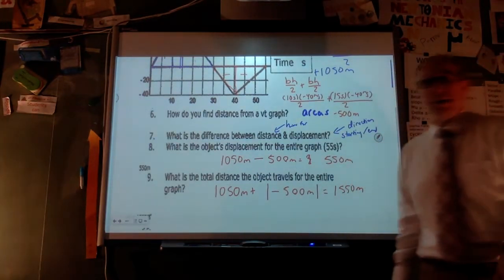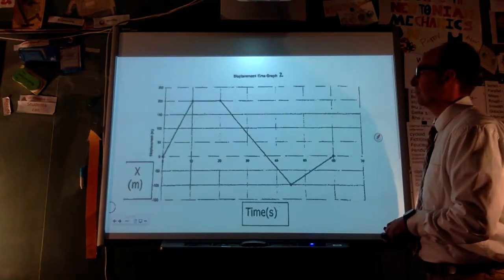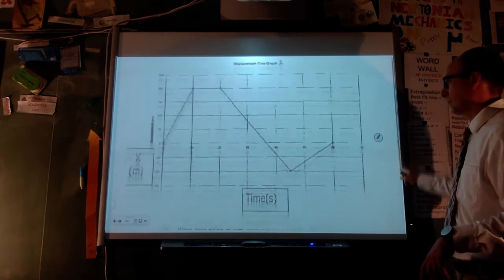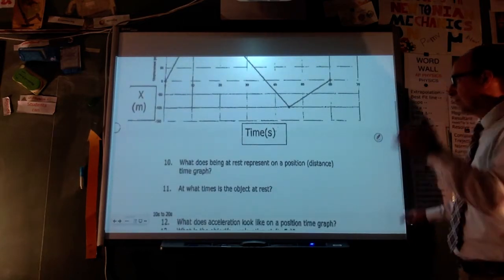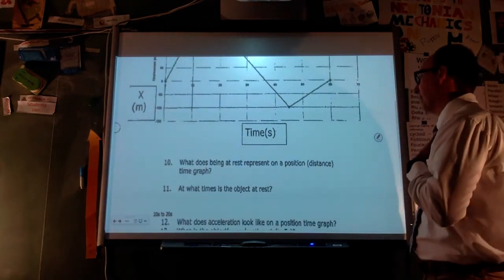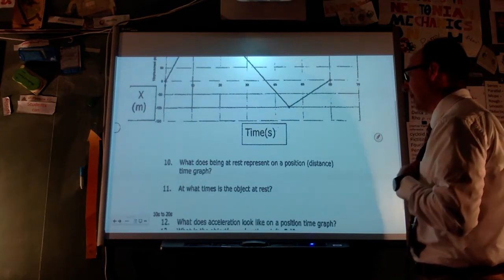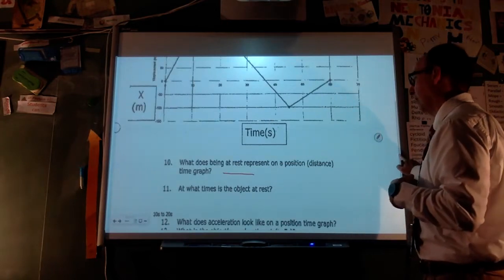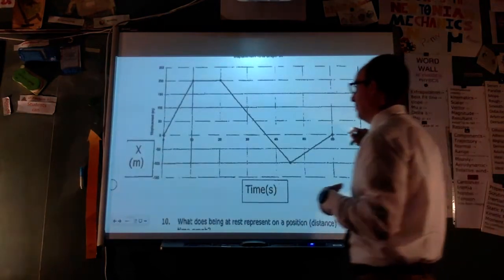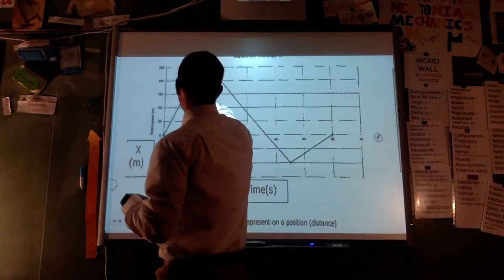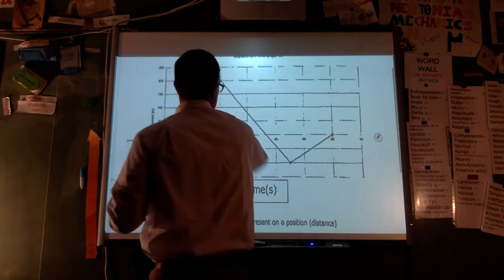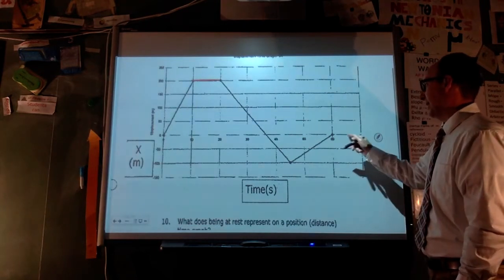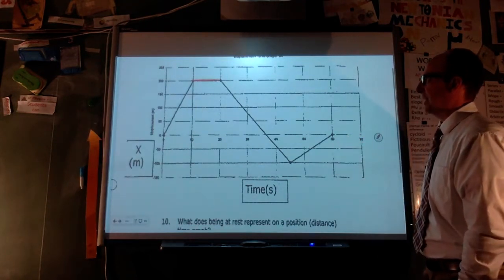We can get either distance or displacement from a velocity-time graph. Now, the displacement-time graph: what does being at rest look like on a position-time graph? It is a horizontal line. At what time is the object at rest? It appears to be at rest from about 10 to 20 seconds — there's a clear horizontal segment there.